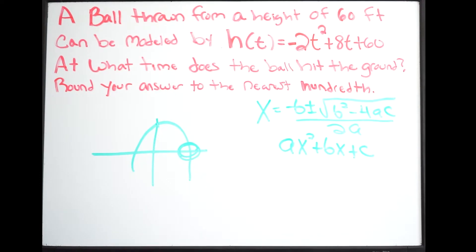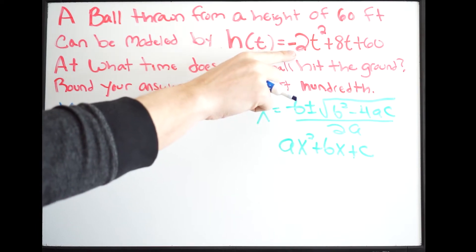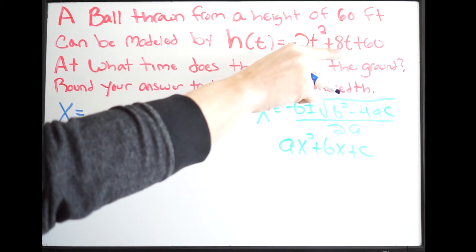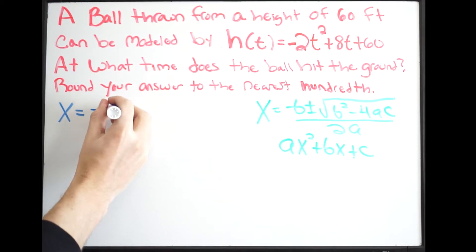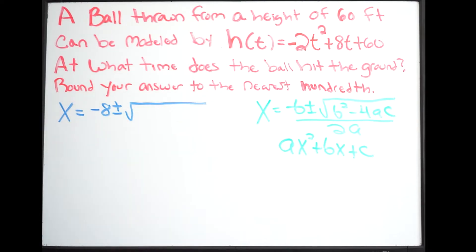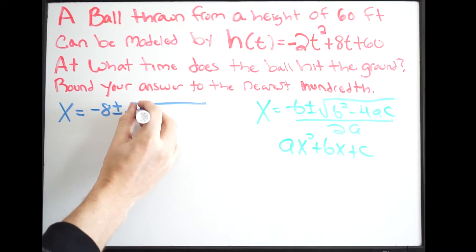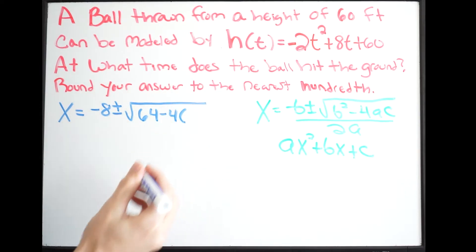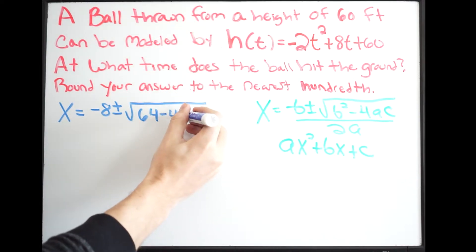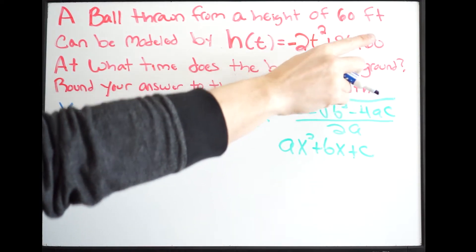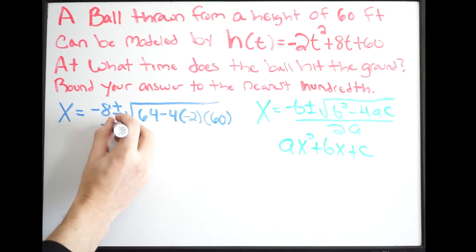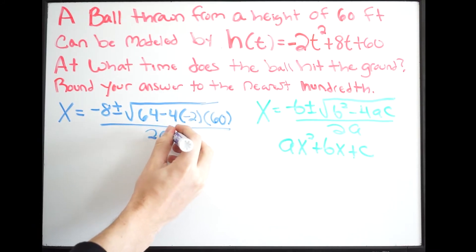Let's get into this problem and start finding the zeros by plugging into the quadratic formula. So x equals — looking back at our quadratic, this is a, this is b, and this is c. My b is 8, so when I plug it in, it's negative 8 plus or minus the square root of b squared, that's 8 squared which gives 64, minus 4 times a which is negative 2, times c which is 60, all over 2 times negative 2.